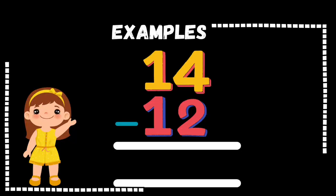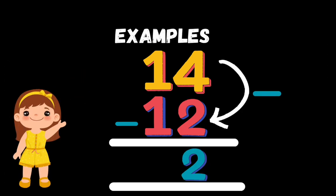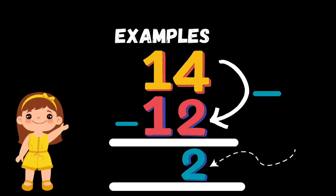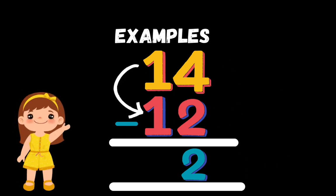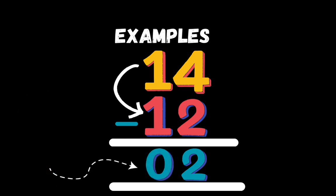Examples for subtraction. 14 minus 12 is equal to what? 4 minus 2 is equal to 2. 1 minus 1 is equal to 0. So the answer is 2 by subtracting 14 and 12.